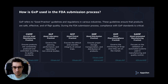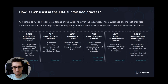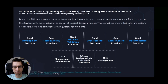Here you can see different types of GXP guidelines. They can refer to current good manufacturing practice, good laboratory practice, good clinical practice, good distribution practice, good pharmacovigilance practice, and good automated manufacturing practice.